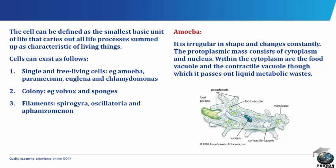Amoeba: it is irregular in shape and changes constantly. The protoplasmic mass consists of cytoplasm and nucleus. Within the cytoplasm are the food vacuole and the contractile vacuole, through which it passes out liquid metabolic wastes.